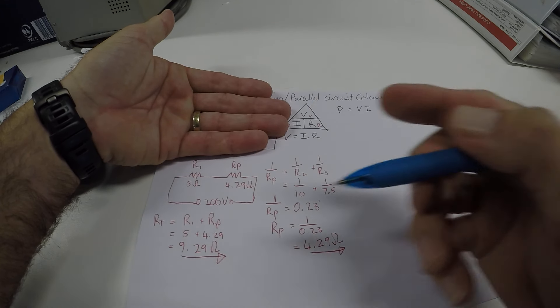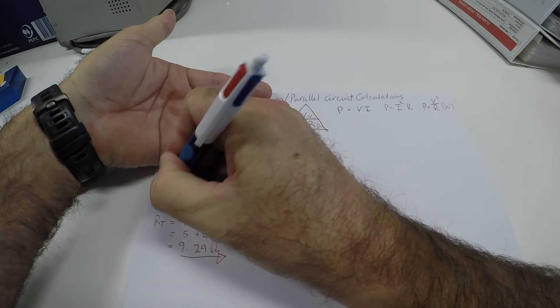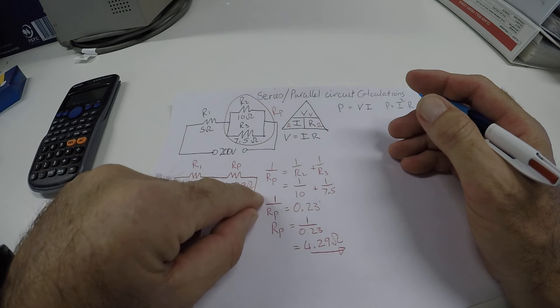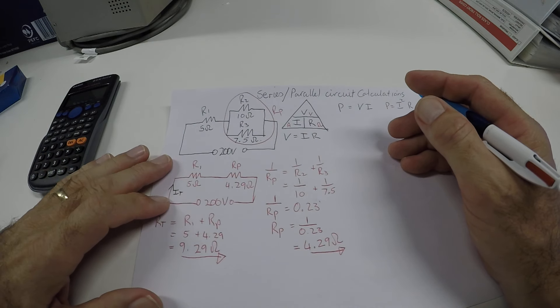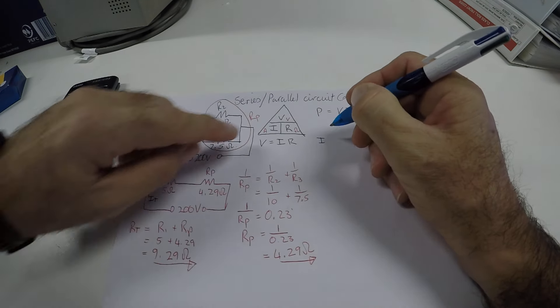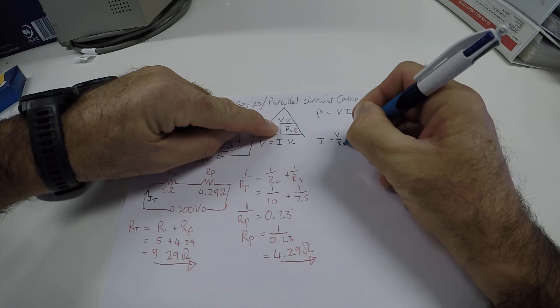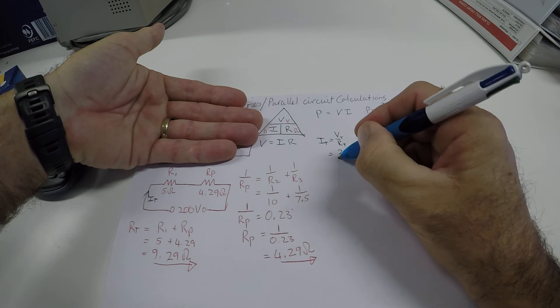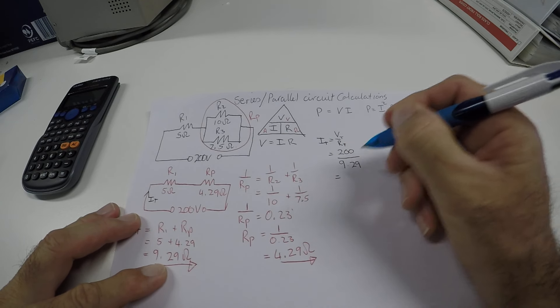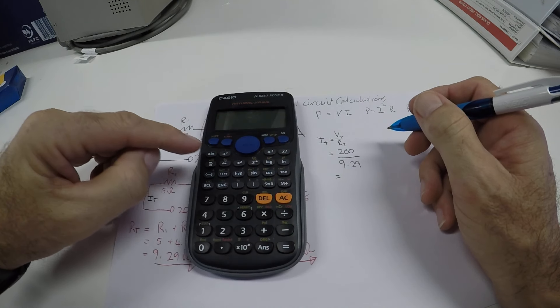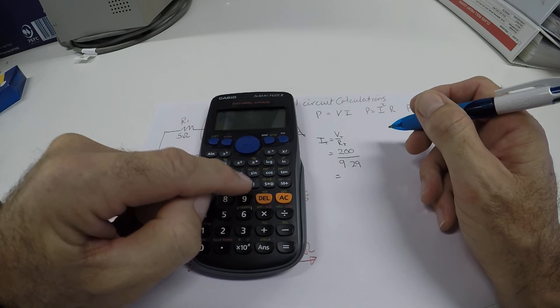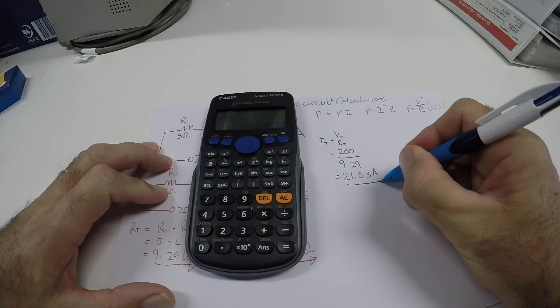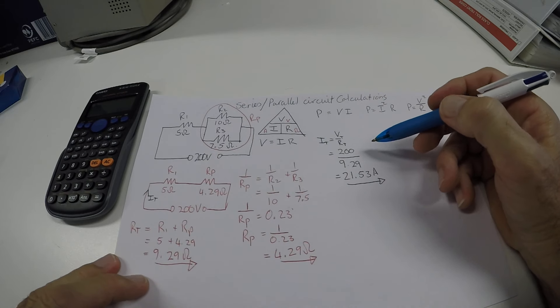So the next thing I am going to do, still looking at just this drawing, I am going to now calculate the total current. So total current, I total. And we remember from the series circuit that the total current is only one path for the current to flow. So that means that I1 and I parallel will also be the same. So let's calculate I total. So I is V over R, voltage divided by resistance. But I am working with the total values. So voltage total is 200. Total resistance is 9.29. In my calculator, 200 divided by 9.29. It gives me a total current of 21.53 amps.